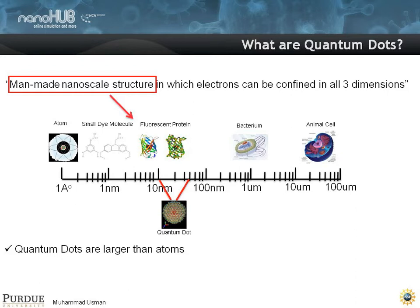So, this is a length scale here, and quantum dots are typically of the order of a few nanometers to a few tens of nanometers. And they compare, in that sense, to atoms in their electronic behavior, but they're orders of magnitude larger. And they're roughly of the order of proteins, but they're smaller than bacteria.